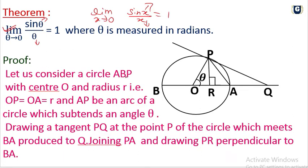To prove this, consider an arc APB with center O and radius R. OP equals OA equals R, and arc AP subtends angle theta at center O. Draw tangent PQ at point P on the circle meeting OA extended at Q. Draw PA and PR perpendicular to OA.